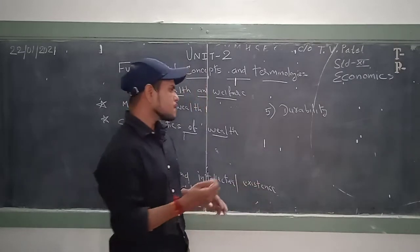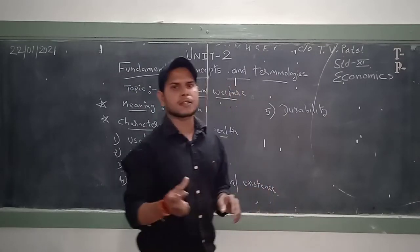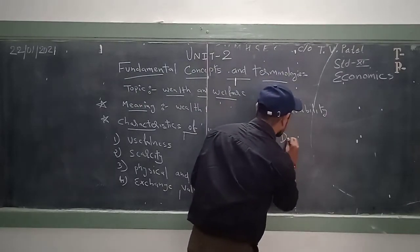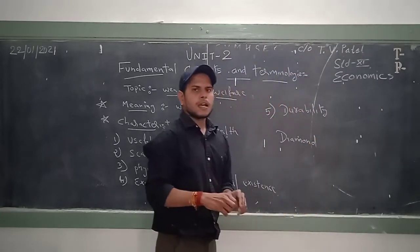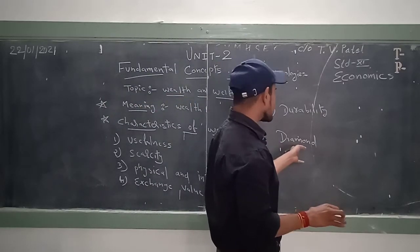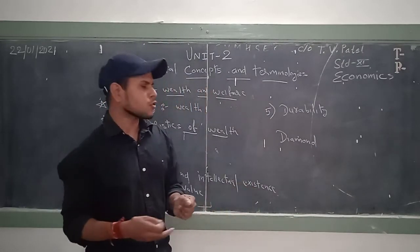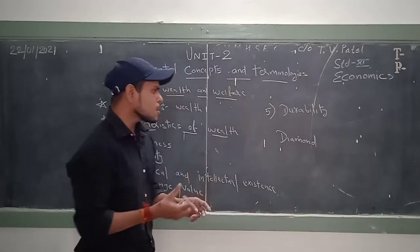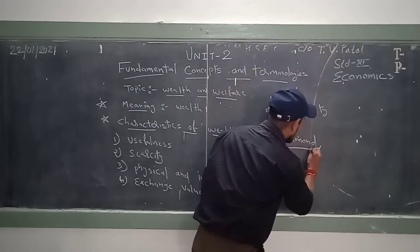The second characteristic of wealth is scarcity. Anything which is scarce in nature we can consider as wealth. For example, diamond — diamond is a very rare good or accessory which we generally prefer to buy when attending any marriage or function. Diamond is scarce — it is hardly available.